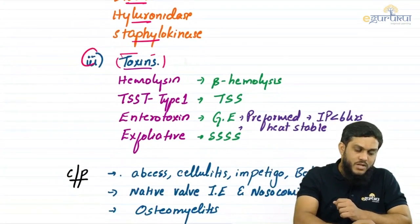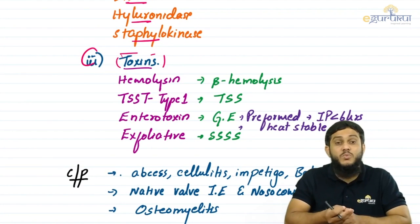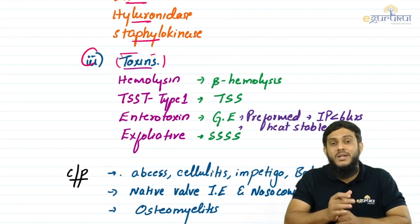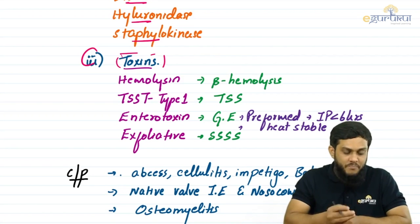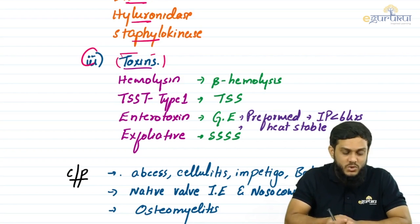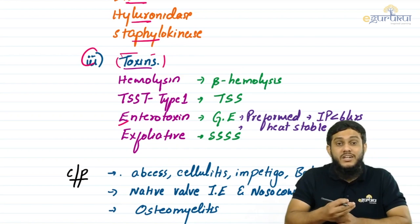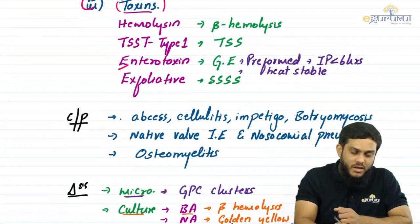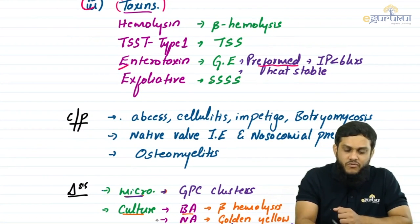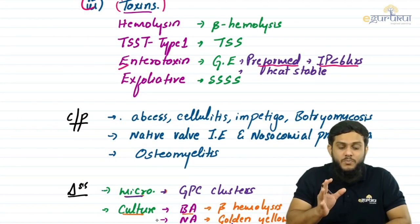Moving on to toxins, staphylococcus has four important toxins. Hemolysin causes hemolysis — breakdown of RBCs — and staphylococcus causes complete hemolysis, that is beta hemolysis. Toxic shock syndrome toxin type 1 (TSST-1) is a superantigen causing toxic shock syndrome. Enterotoxin affects the intestine and causes gastroenteritis. Importantly, the enterotoxin is preformed, so the incubation period is short.